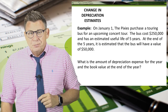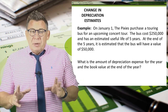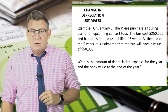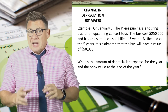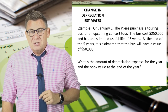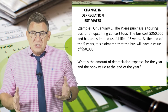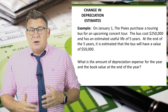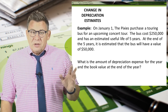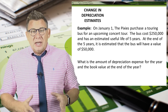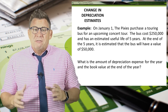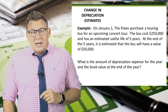Let's look at an example. On January 1, the Pixies purchased a touring bus for an upcoming concert tour. The bus cost $250,000 and has an estimated useful life of five years. At the end of five years, it's estimated that the bus will have a value of $50,000. Using the straight-line method, let's calculate the amount of depreciation expense and the asset's book value at year end.